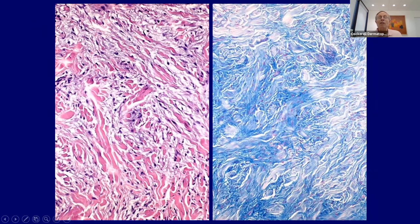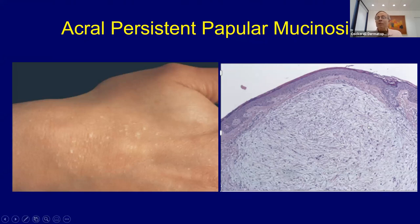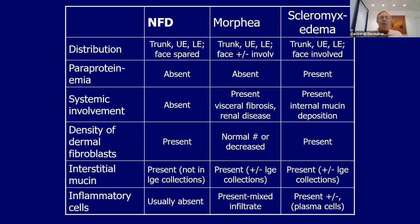If you do a special stain — a colloidal iron stain for mucin — it's just loaded; it highlights all the mucin and makes it more obvious. Then there's a variant called acral persistent papular mucinosis — fewer lesions, acral distribution. These patients often don't have an underlying paraproteinemia, though they should be followed. It almost looks like a little area of just focal cutaneous mucinosis, but it's got a few more fibroblasts in the stroma. If you see just focal cutaneous mucinosis there's usually one lesion; here there's a cluster of about 20 or 30 lesions — make sure it's not part of a more widespread systemic process.